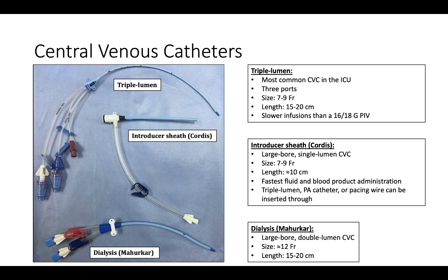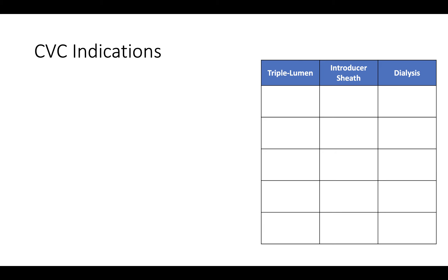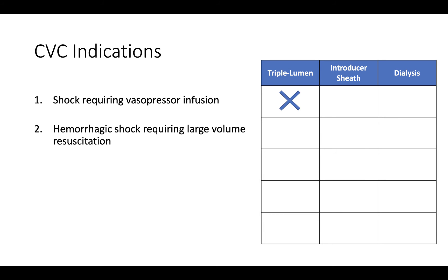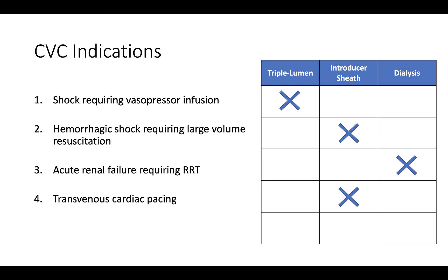The most common indication for placing a central venous catheter is shock requiring vasopressor infusion. Vasopressors require central access due to concern for peripheral extravasation, which can cause vasoconstriction and skin necrosis. The triple lumen is preferred for vasopressor support. Other indications include hemorrhagic shock requiring large volume blood product resuscitation (introducer sheath), acute renal failure requiring renal replacement therapy (dialysis catheter), heart block requiring transvenous pacing (introducer sheath), and apheresis such as plasmapheresis (dialysis catheter).